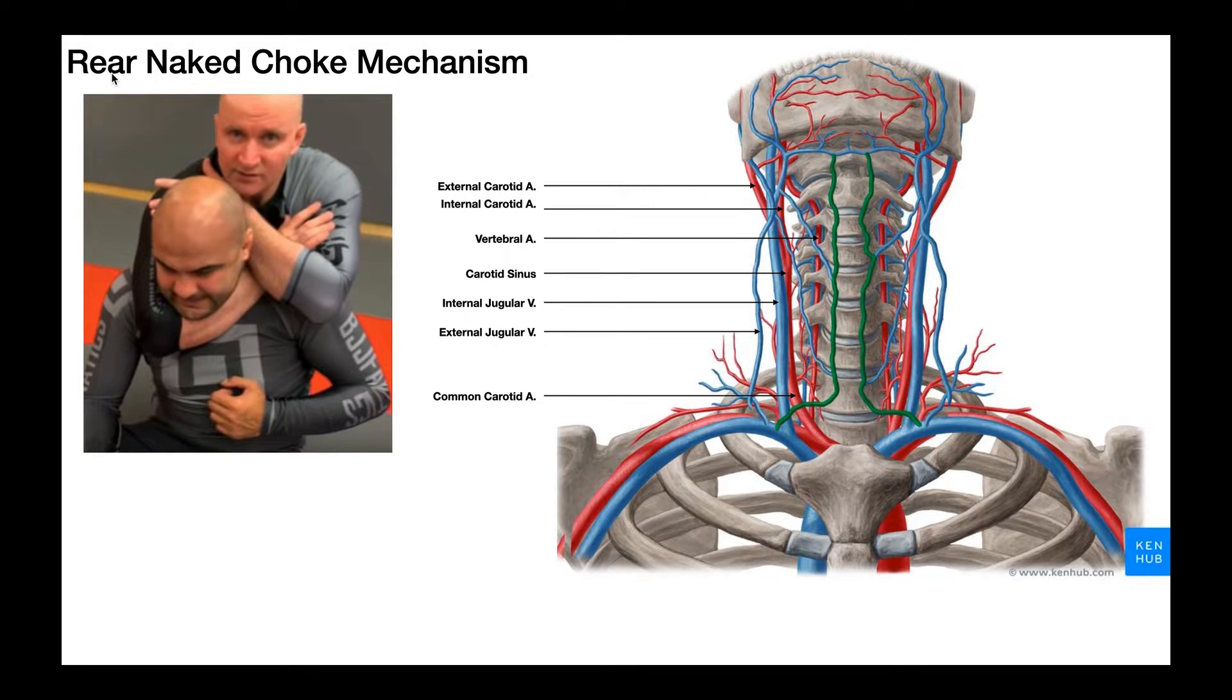Now, what the mechanism of a rear naked choke does not involve, or I should say its focus should not be, is compressing the trachea. So the trachea is not shown in this picture right here, but it would actually be anterior to your neck vertebral column. It's the windpipe. If you just take your finger and poke the anterior part of your neck, the front part, you'll actually feel the trachea. That's how air gets in and out of the lungs.